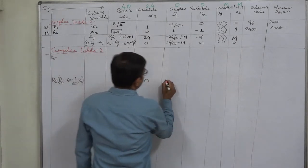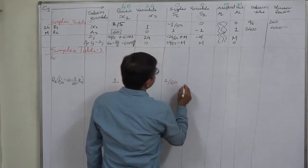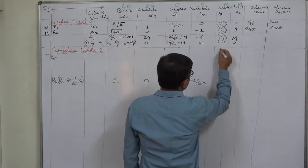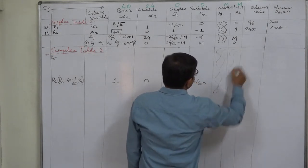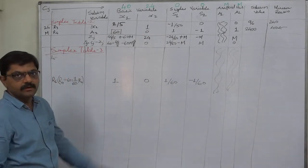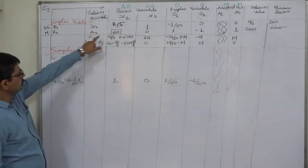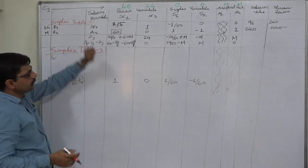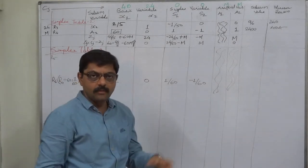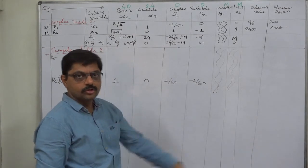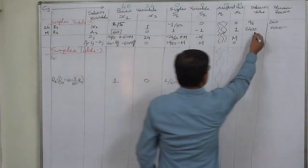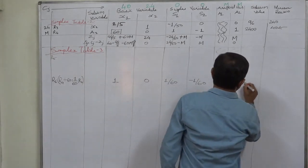Continuing R6: 0 divided by 60 is 0, 1 divided by 60 is 1/60, minus 1 divided by 60 is −1/60. We are going to drop the two columns of A1 and A2 because they have no role now. We are also going to drop A2 from the row; when an artificial variable is dropped from the row, its column should also be dropped to make the table simpler. 2400 divided by 60 is 40.